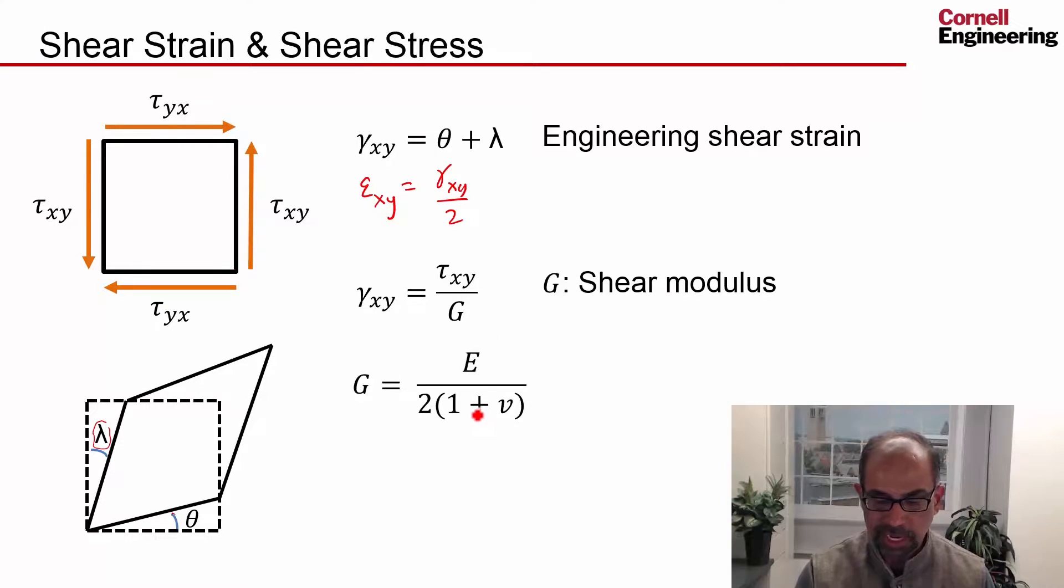And for small strains, from geometric considerations and for isotropic material, one can show that g is related to the Young's modulus and Poisson ratio.